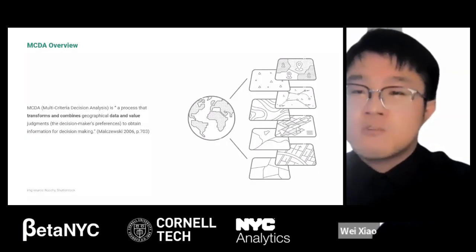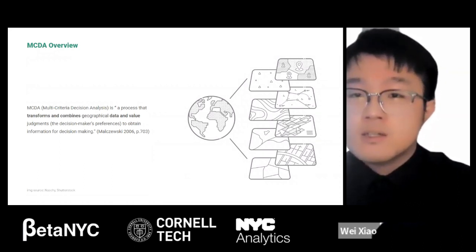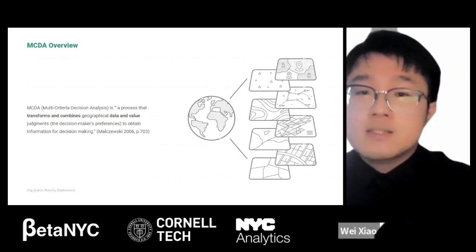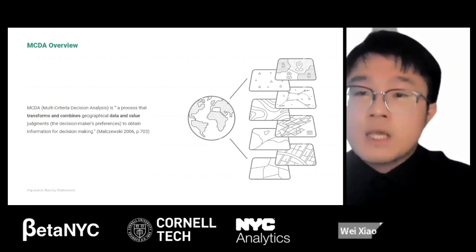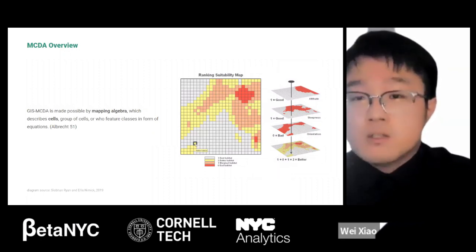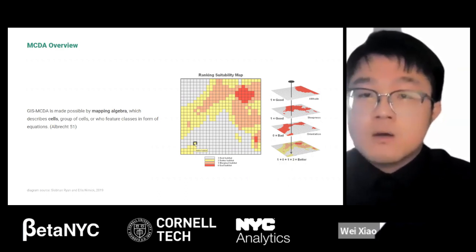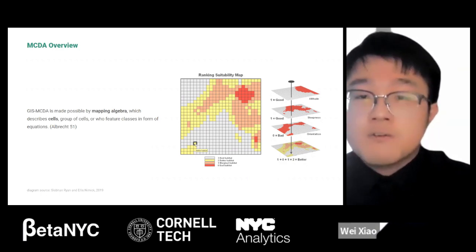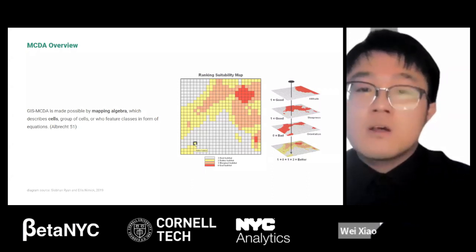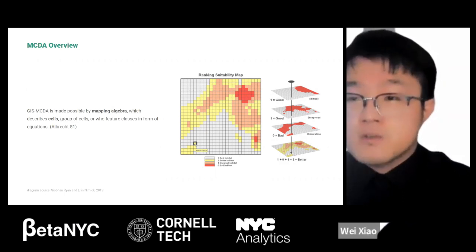This section covers our research methodology and how urban data is collected and incorporated into the decision-making process. The project primarily uses multi-criteria decision analysis, or MCDA, which transforms and combines geographical data and value judgments to obtain information for decision making — a crucial method in the planning discipline. MCDA is made possible by map algebra, which describes cells in terms of values through equations. The final ranking suitability map, grading from 0 to 3, is a combination of values from each decision layer at the cell level.